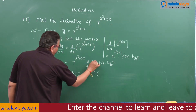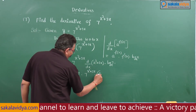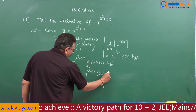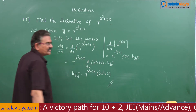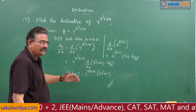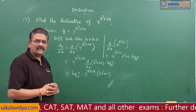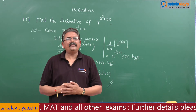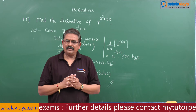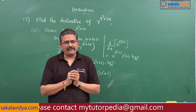Now the derivative of x cube is 3x square, and plus the derivative of 3x is 3. So this is the final answer. You can check this problem because this model is very very important — it may appear in board examinations as well as in different competitive entrance examinations. I hope you might have followed this problem. Once again check the derivative of a^f(x).